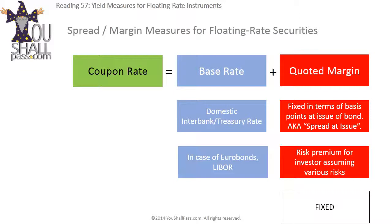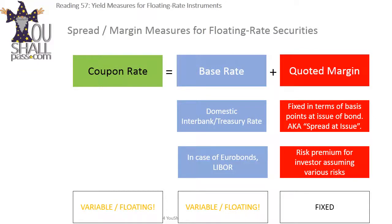The base rate, whether referenced to Treasuries or LIBOR, is a market rate and is subject to fluctuations on a daily or even minute-to-minute basis, so it's very likely to change from coupon date to coupon date. When you add a fixed quantity — the quoted margin — to a variable quantity — the base rate — the result is also variable. That is the concept behind calling these bonds floating rate bonds and these coupons floating rate coupons.